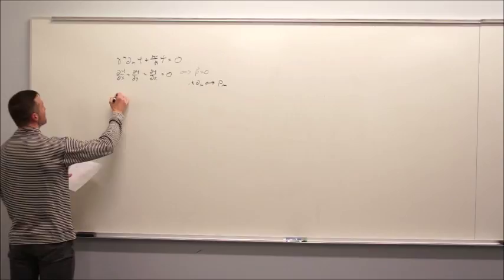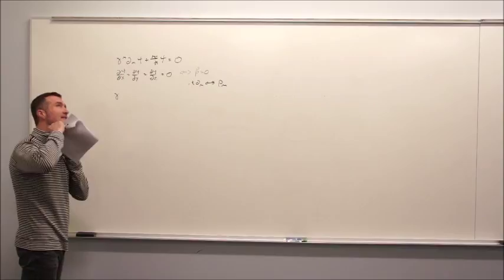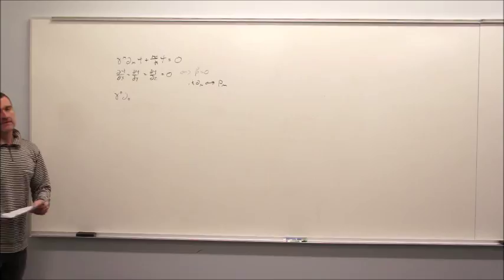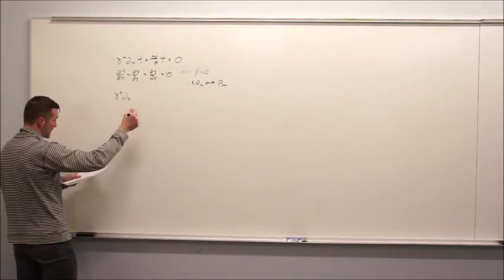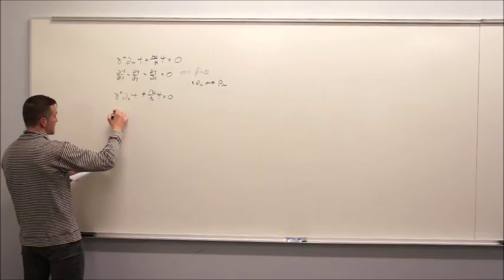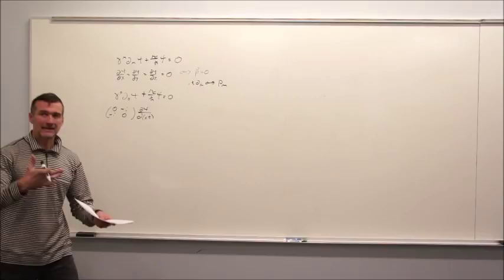With that in mind, if I write down the Dirac equation assuming all of the derivatives in the spatial directions are zero, then d-mu is only going to get a term from d-zero. So we have gamma-mu d-zero psi plus mc over h-bar psi equals zero. And if we remember the form of gamma-zero, that's the matrix acting on d-psi/d(ct), plus mc over h-bar psi equals zero. Remember, x-zero is ct, to get the dimensions right.